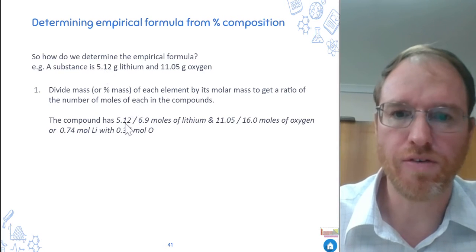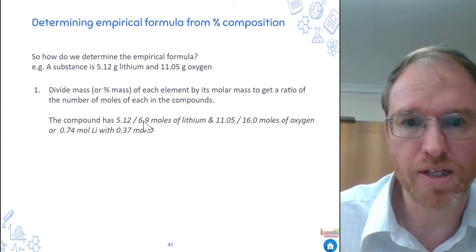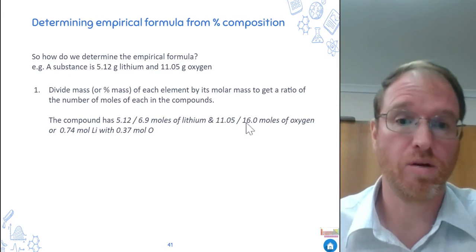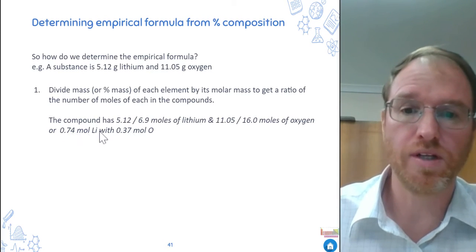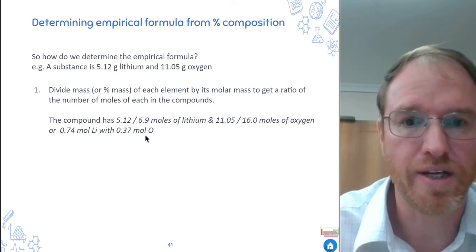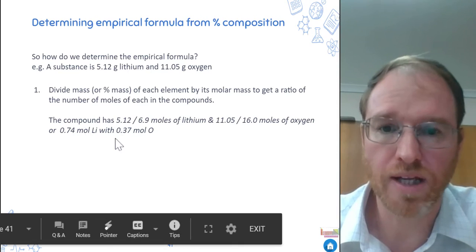So in this case, there's 5.12 grams of lithium divided by 6.9, the molar mass of lithium. There's 11.05 grams of oxygen divided by 16, the molar mass of oxygen. And we get a ratio of 0.74 moles of lithium to 0.37 moles of oxygen. That's actually a molar ratio now, because we divided by the molar mass. Now we want to get nice whole numbers.